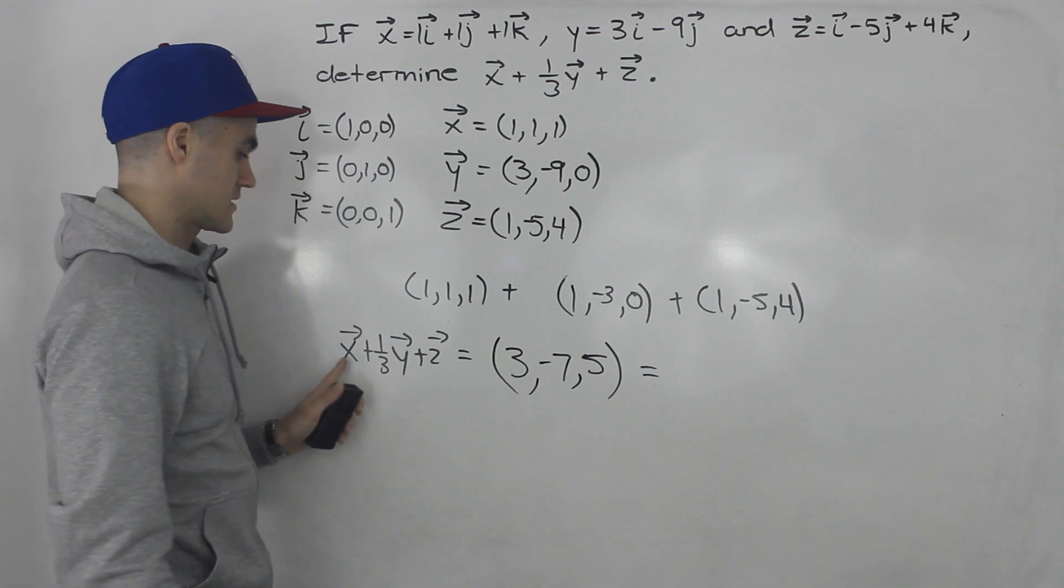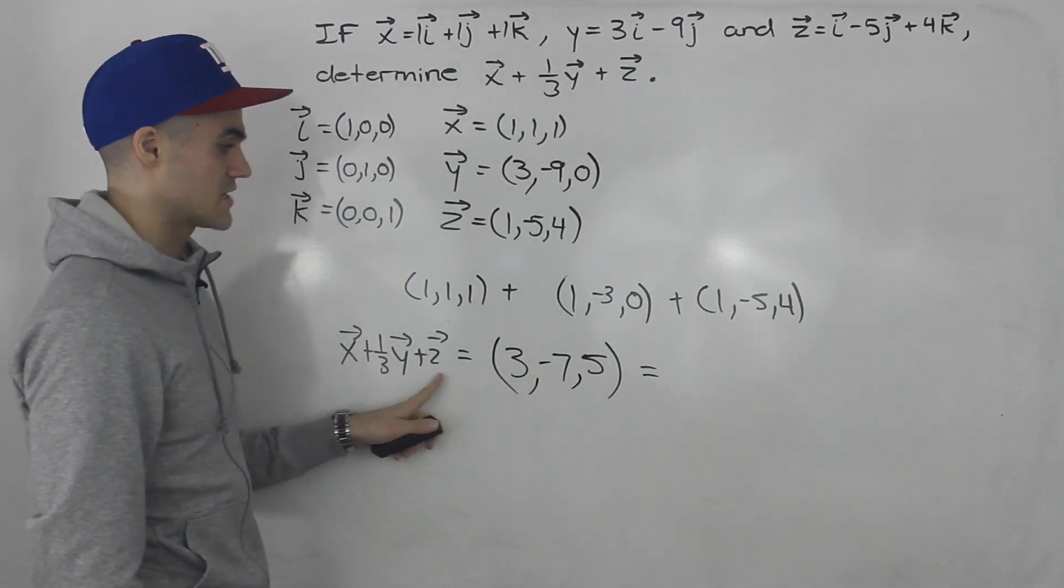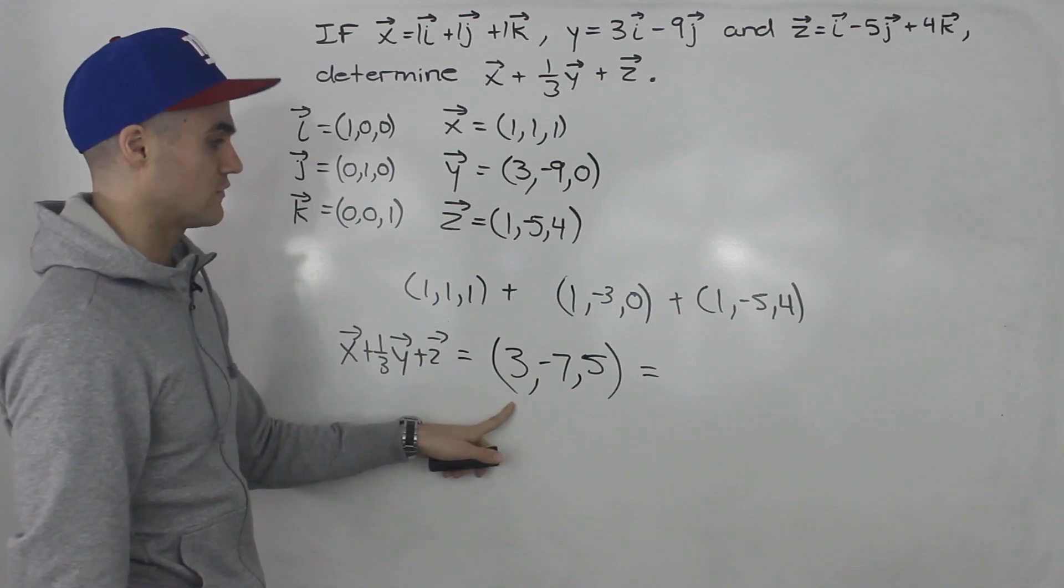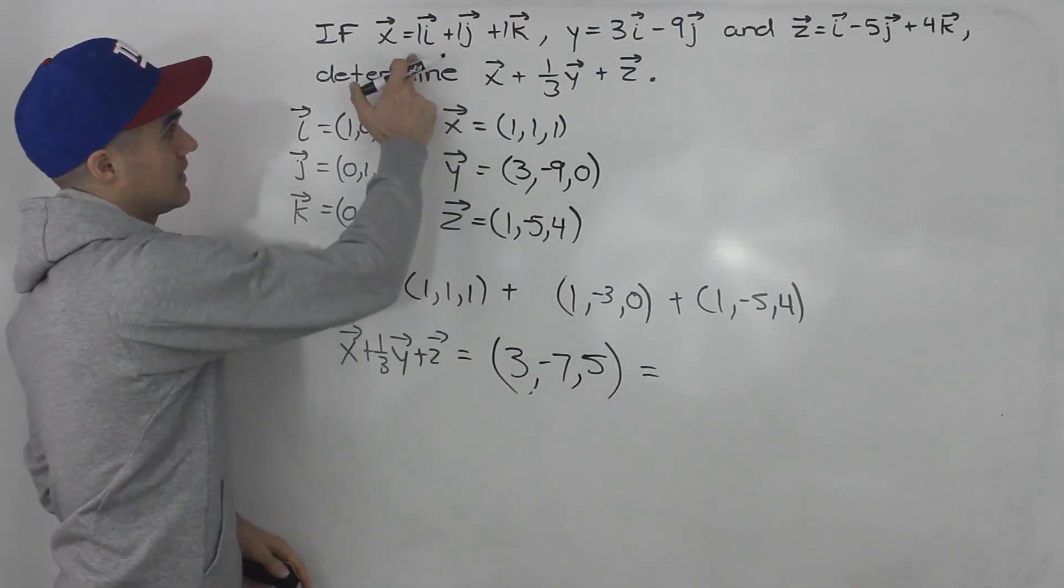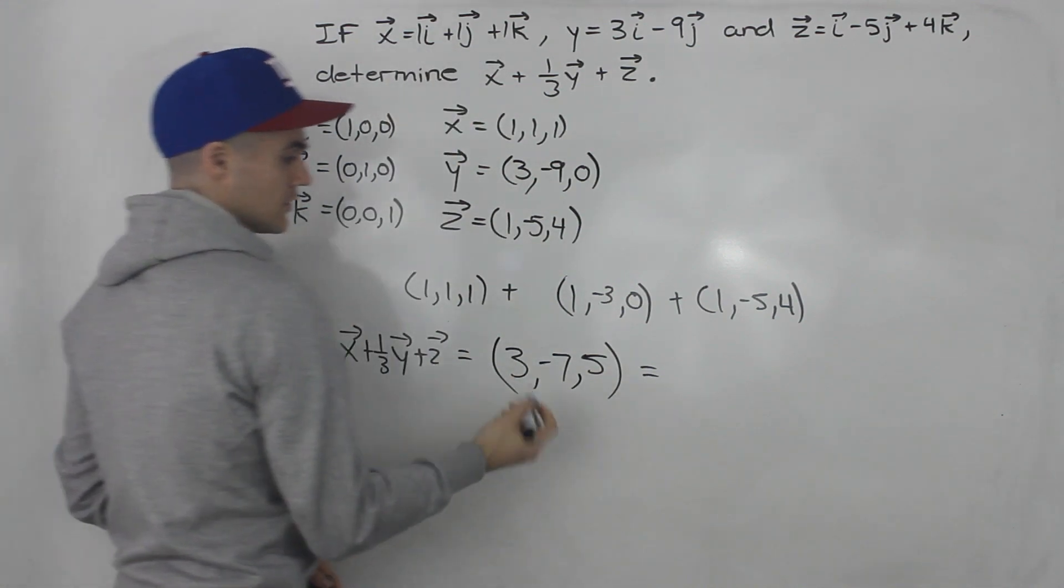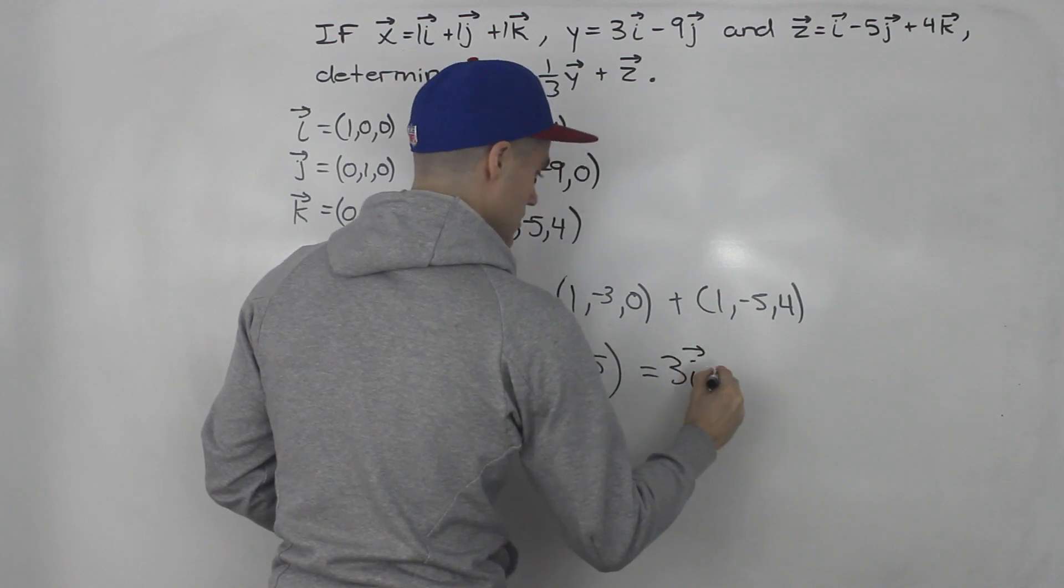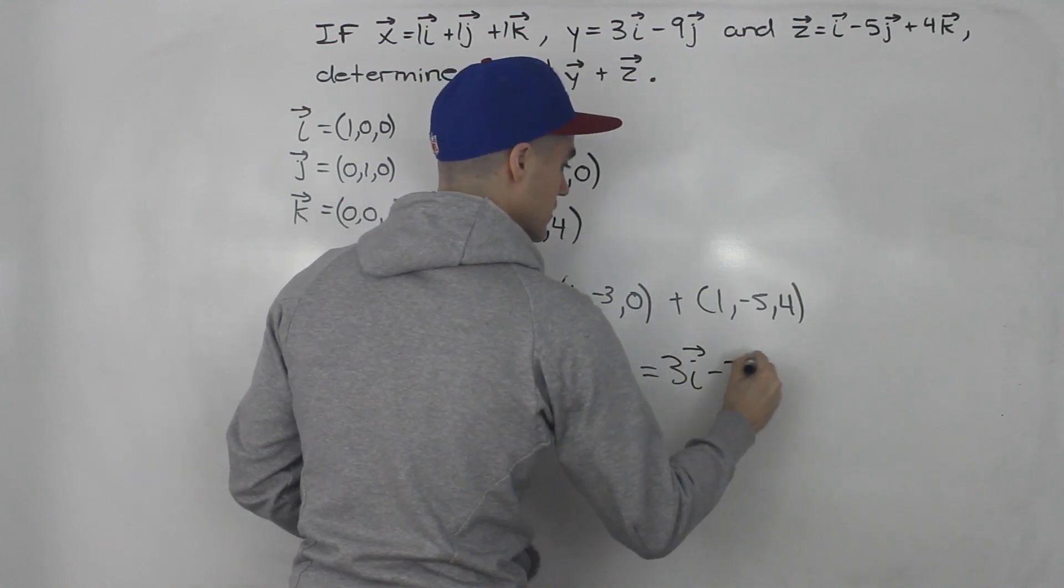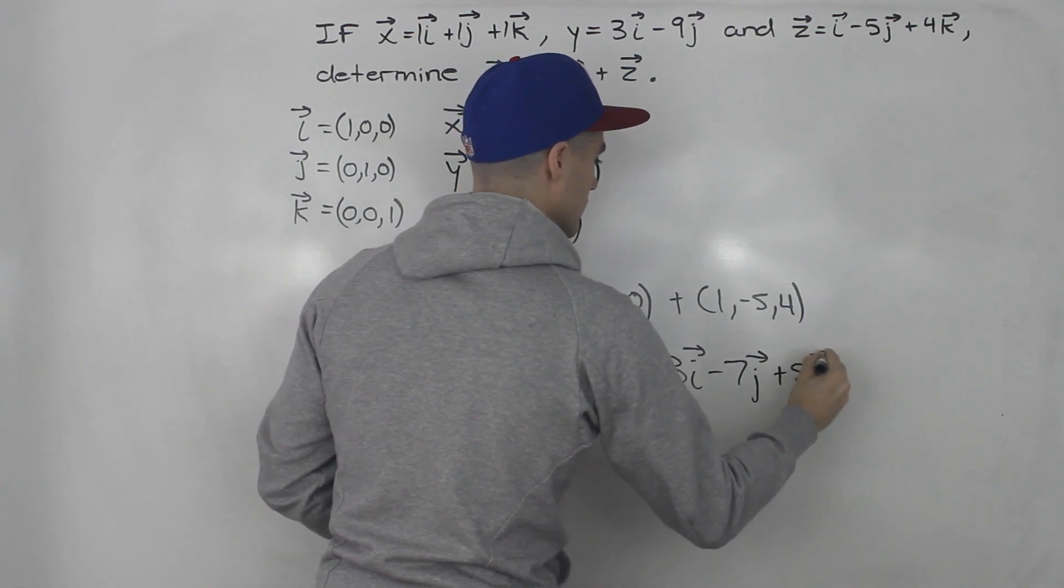So this here represents vector x plus one third of vector y plus vector z. That is in coordinate form. And if you want to take this coordinate form and represent it as coordinate unit vectors, you can do that as well. So we would write 3i minus 7j plus 5k.